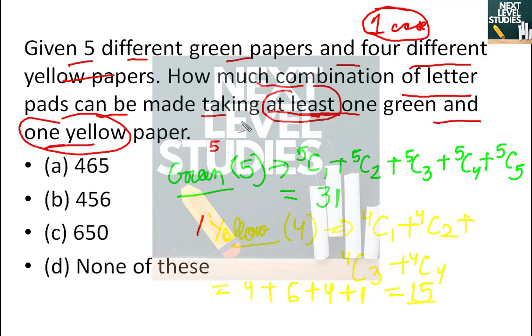Now you need to multiply, not add, because you need to make a combination, just like the shirt-pant example. The total number of ways is 31 into 15. Since we have at least one of each, we multiply directly.